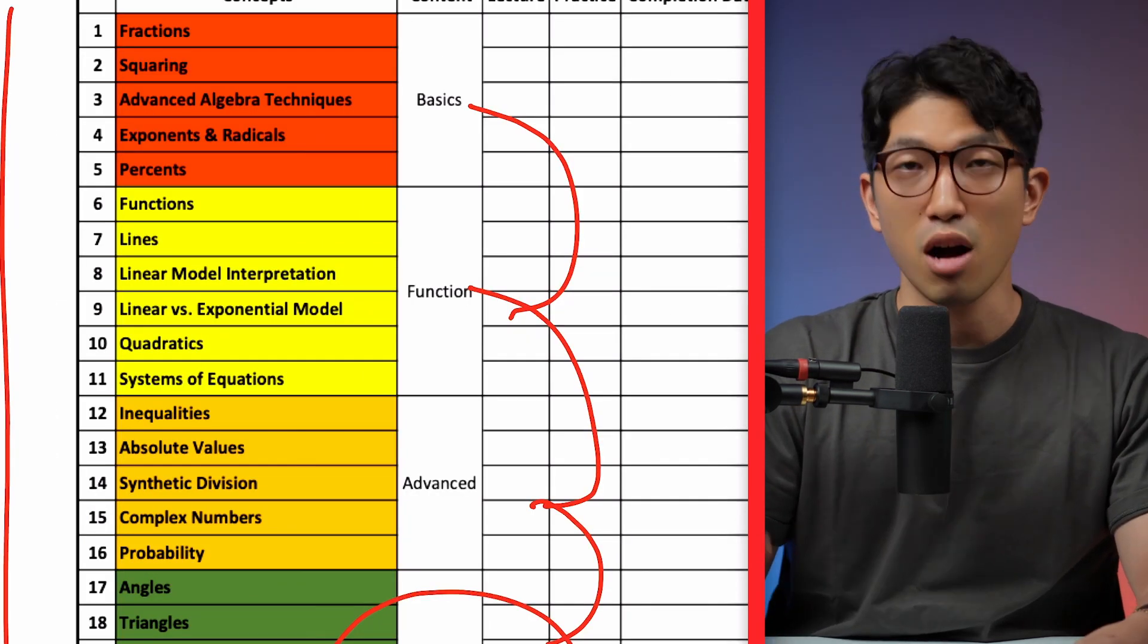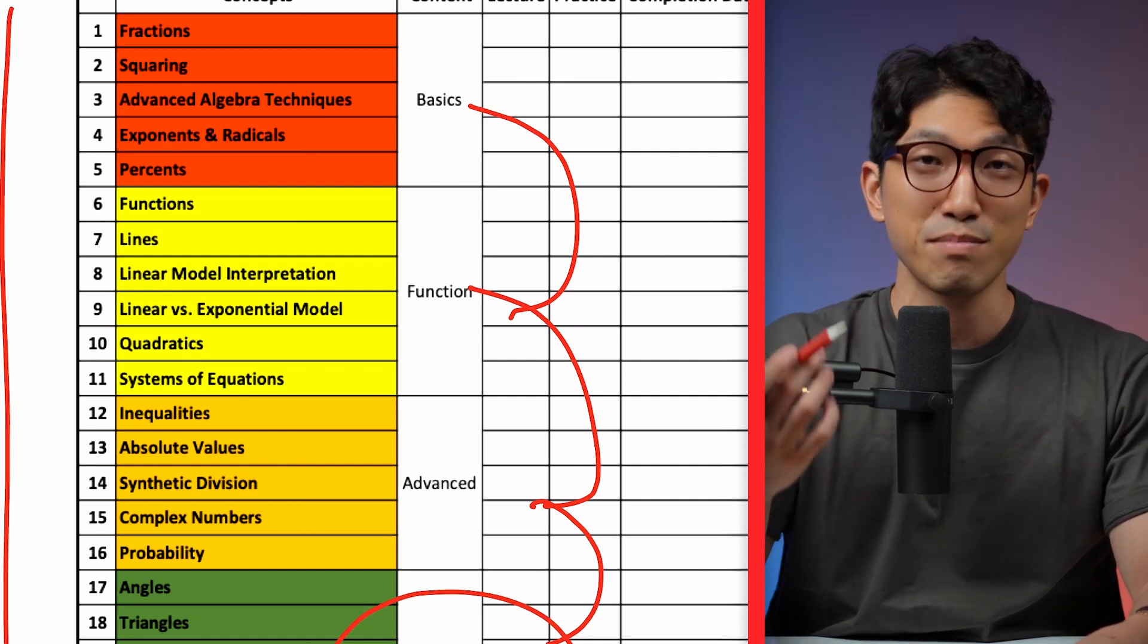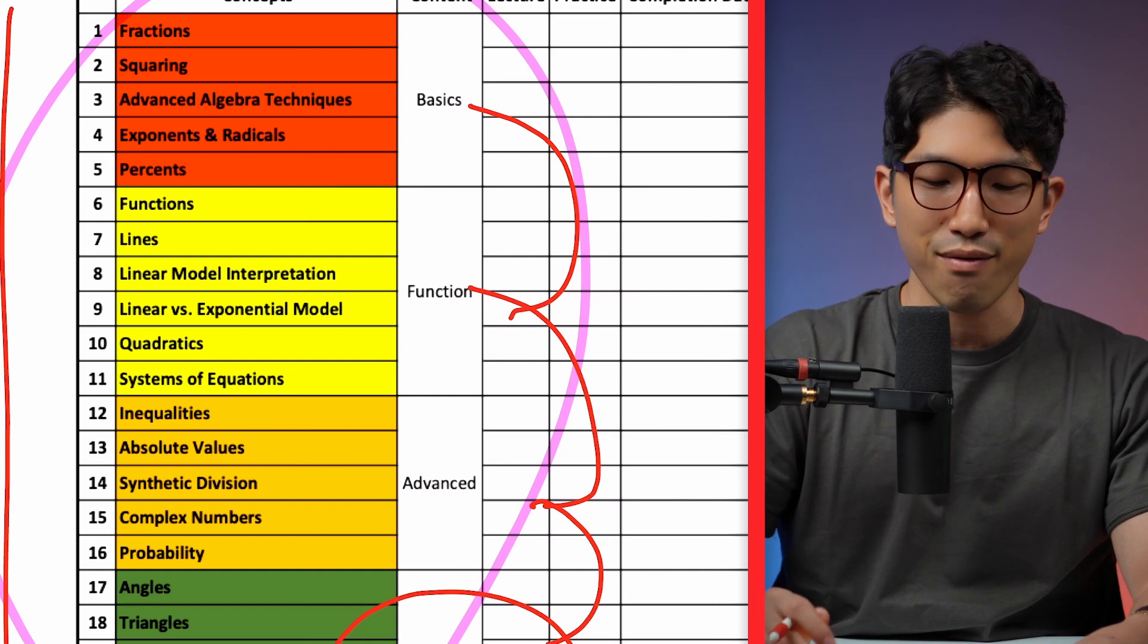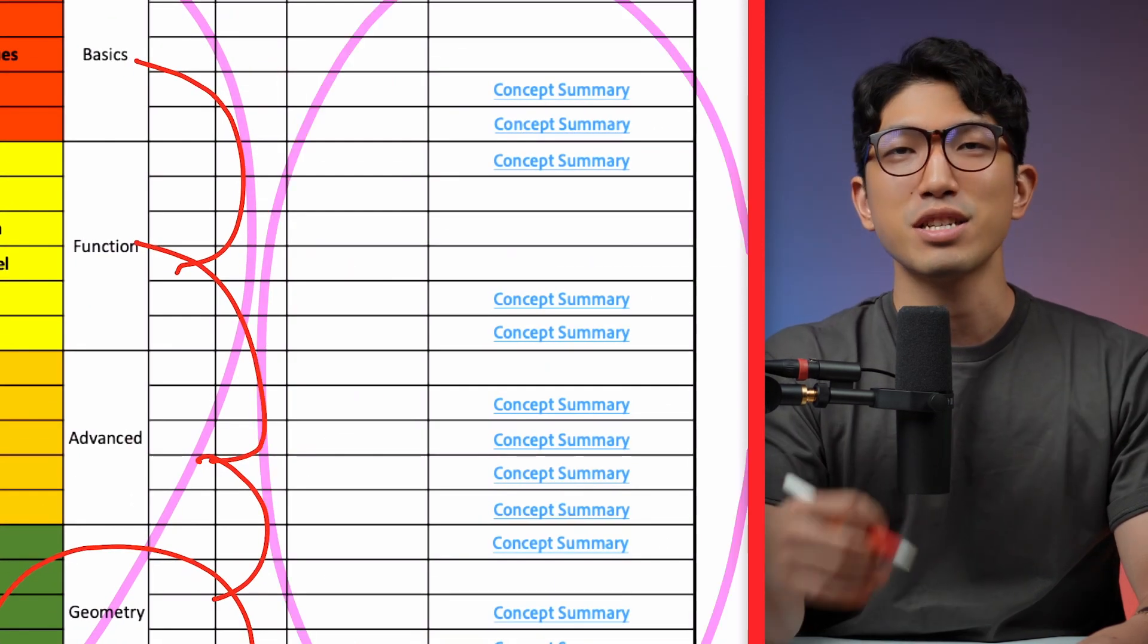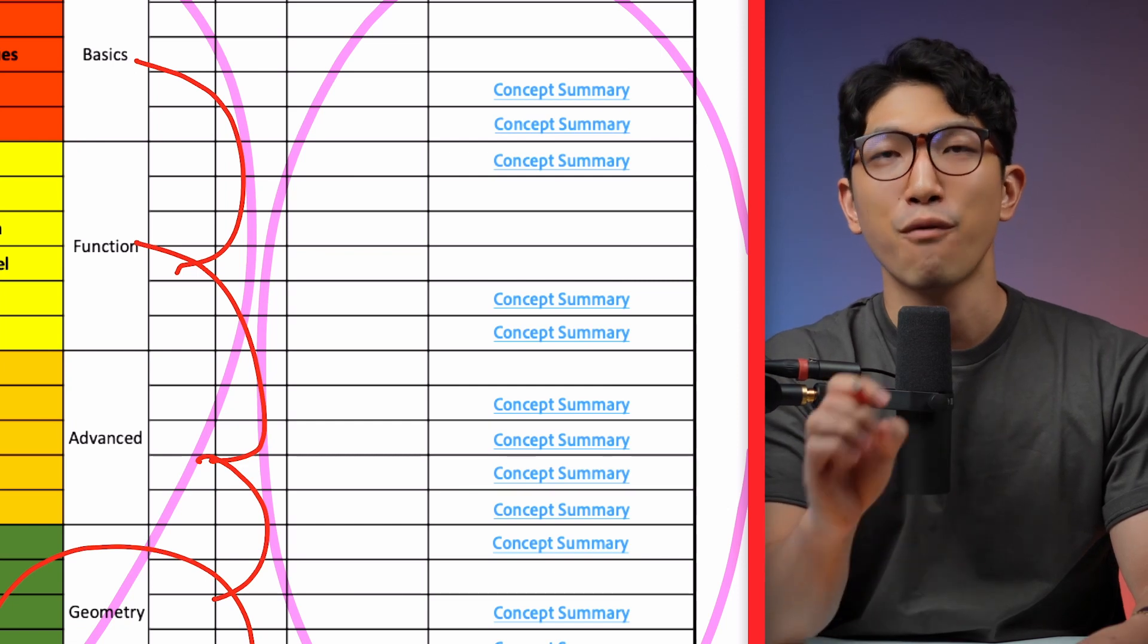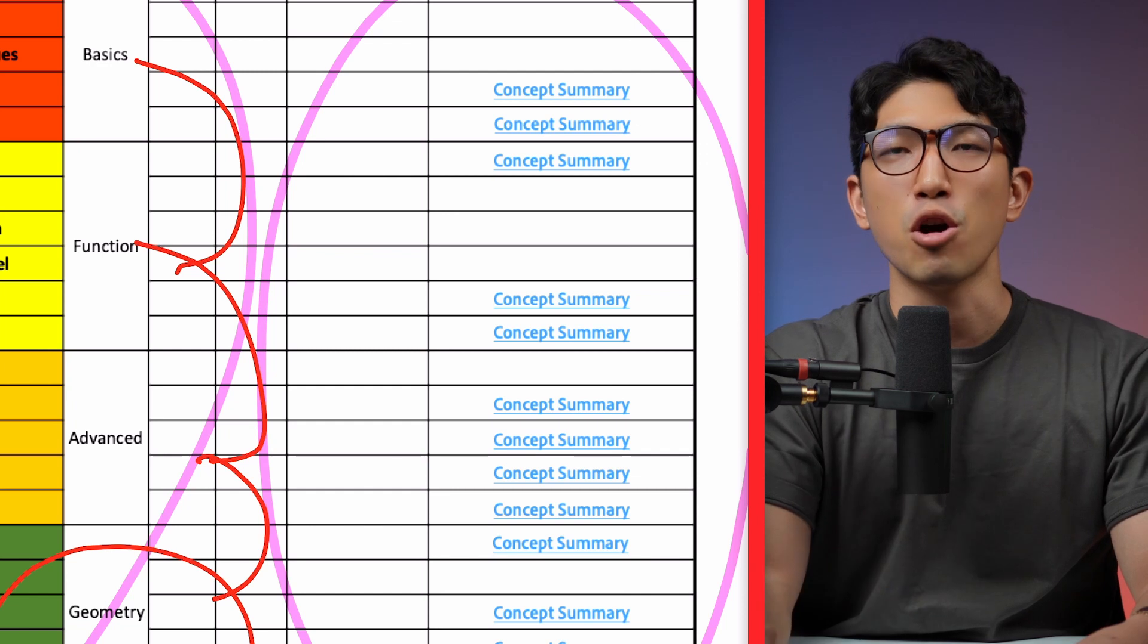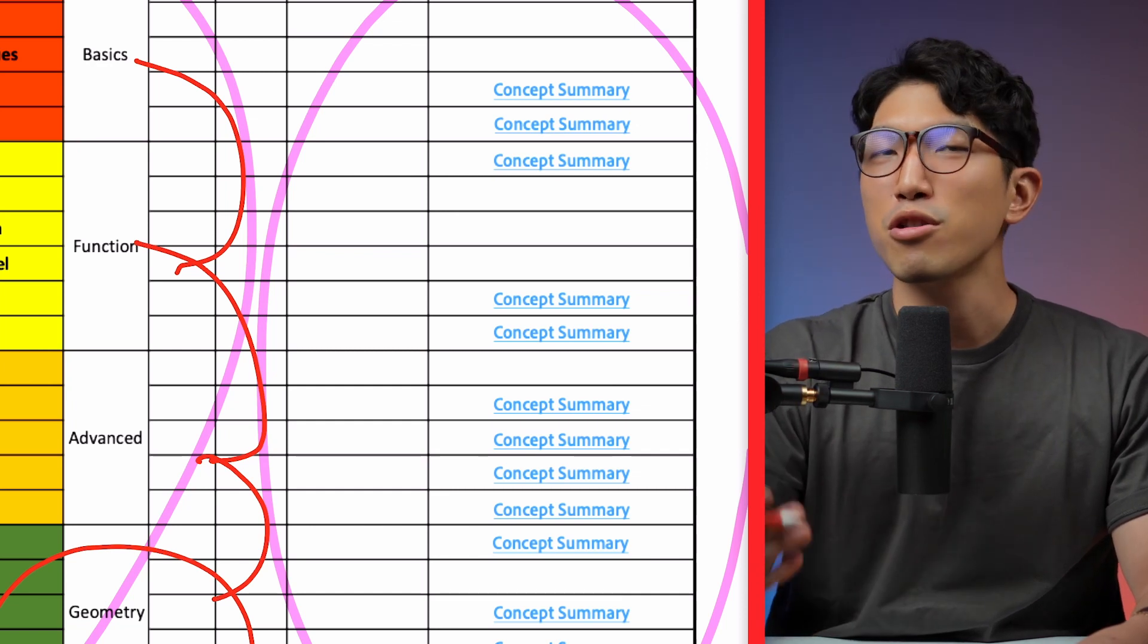So I'm going to link this worksheet in the pinned comment down below, which you can print out. And once you download, it's going to have concept summaries for essentially more than half of these topics. And these videos are essentially going to summarize everything and the only things you need to know about certain topics for the SAT. Remember, you don't need to know everything. You just got to know the right things. And on top of learning all the concepts, you need one more thing to solve every question correctly on the SAT.